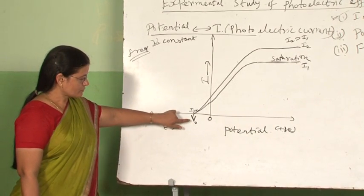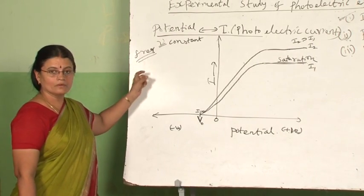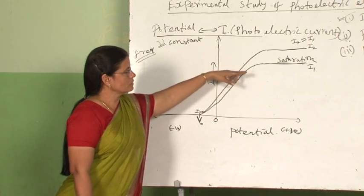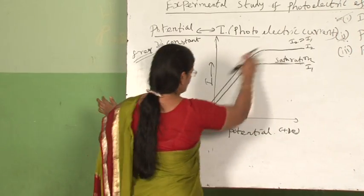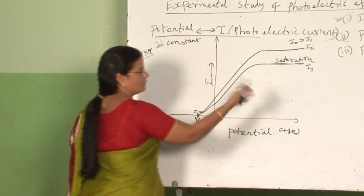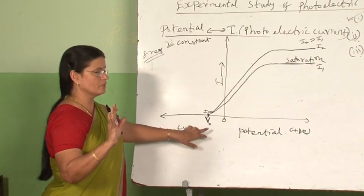That means stopping potential depends only on the frequency, not on the intensity. Even if you're changing the intensity, stopping potential is coming the same. These two are independent of each other—intensity of radiation is not going to affect the stopping potential.